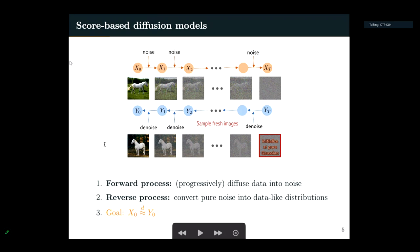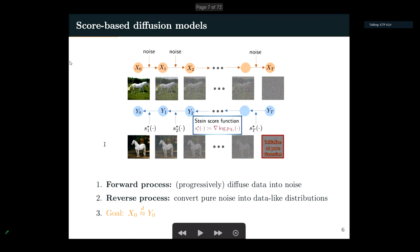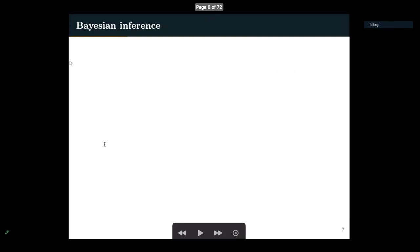Now we have this forward process and this reverse process. The forward process is very simple — we just add noise. The reverse process looks a bit mysterious because obviously we cannot get an image of a horse out of nothing. The magic under the hood is this score function, which is defined as the gradient of the log density. At every denoising step we apply this score function in some way to achieve the denoising.